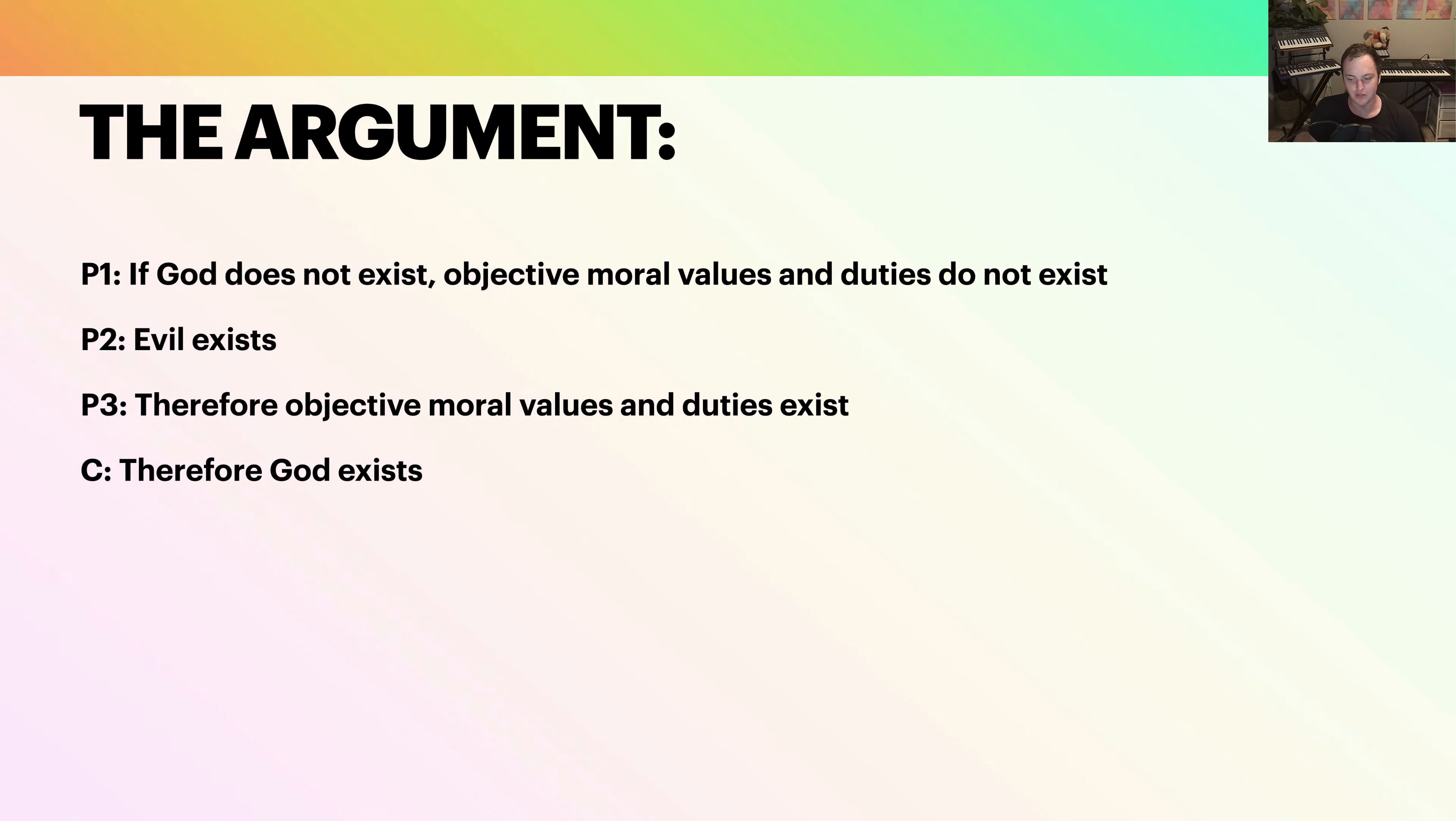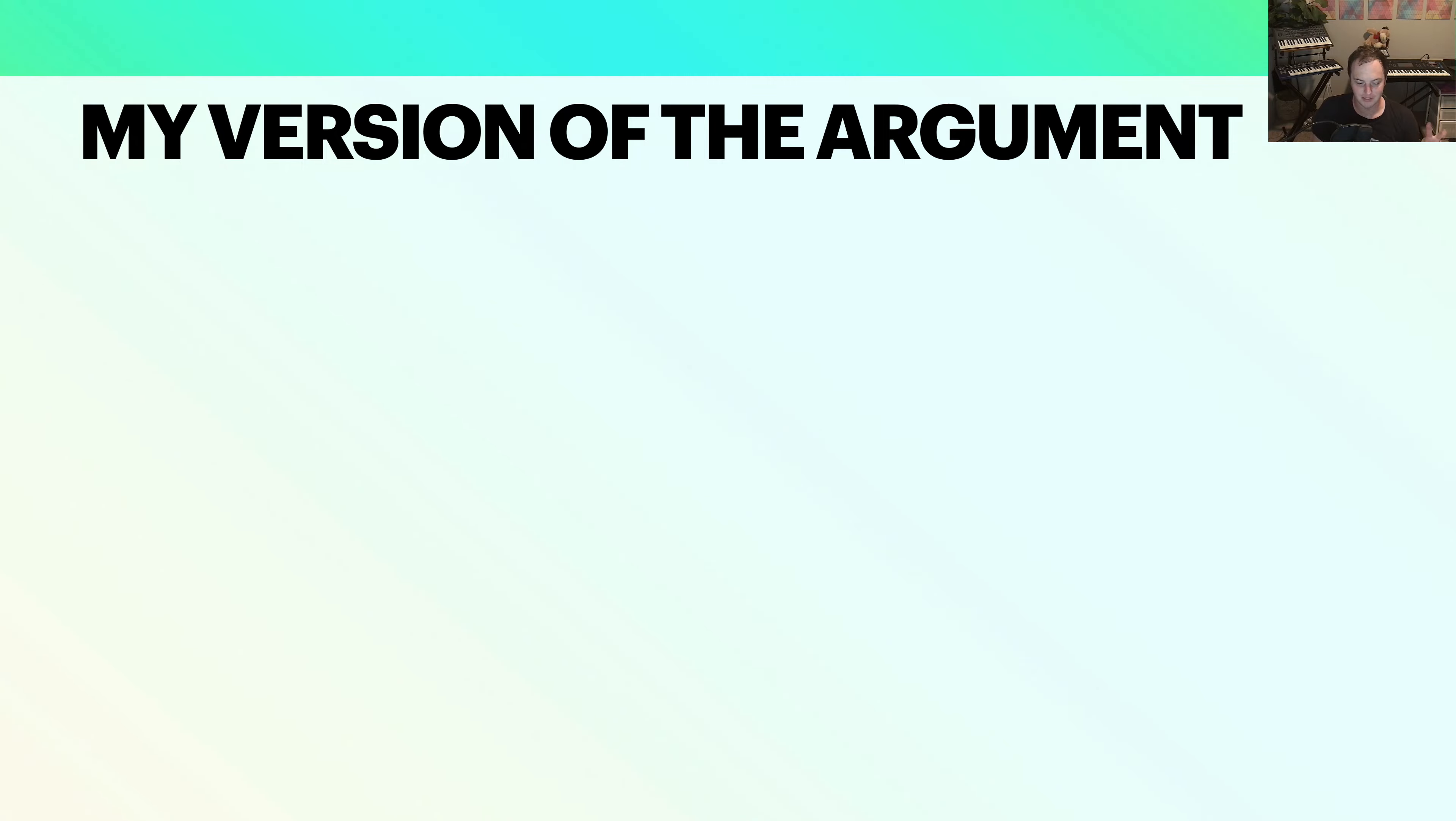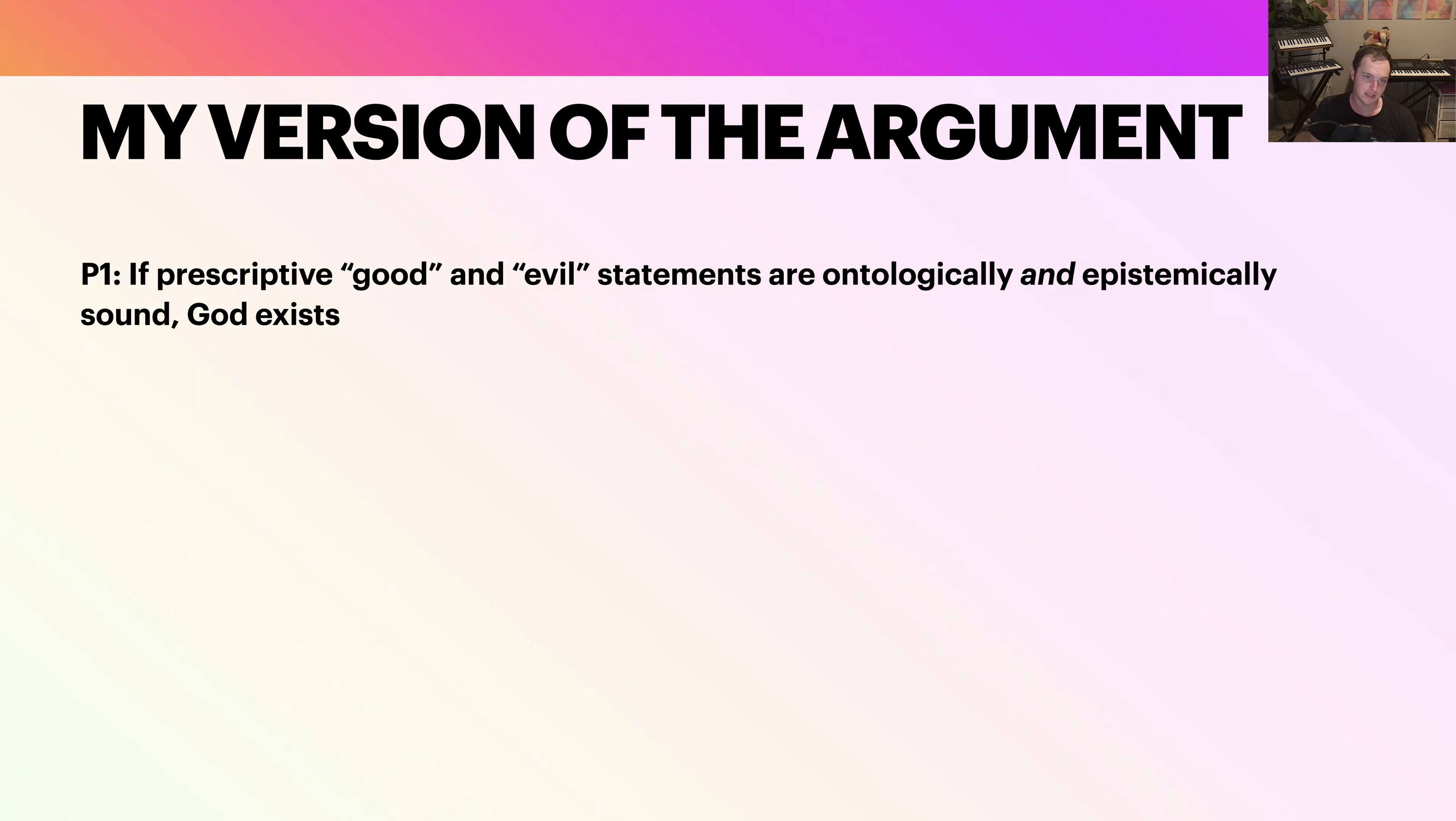So the next version of this argument tries to go a little bit deeper, and it goes like this. This is kind of my simplified version. Premise one, if prescriptive good and evil statements are ontologically and epistemically sound, God exists. So what this means here—lots of big words—if prescriptive good and evil statements, if there are things that are good and evil, if those things need to exist, that's the ontological part, like good must exist, evil must exist. You can say Satan or the absence of God.